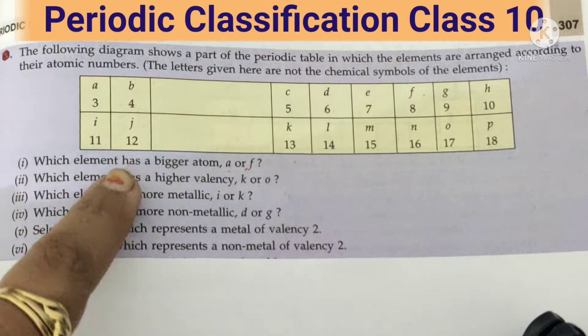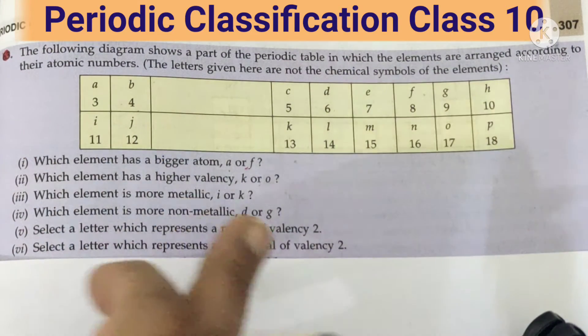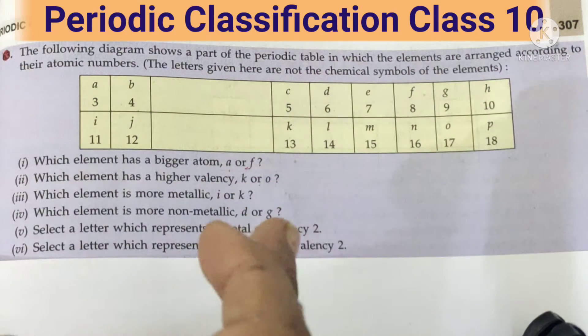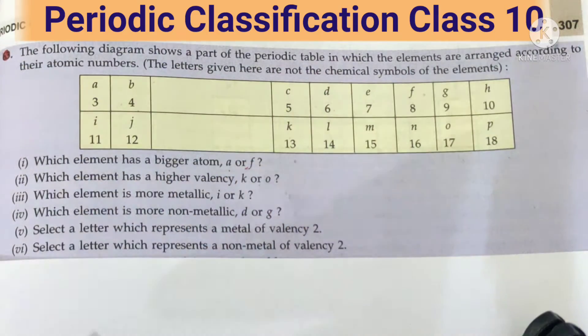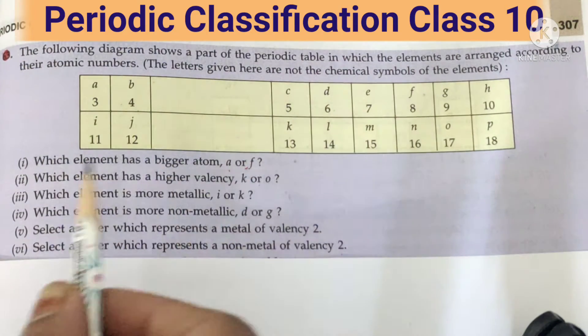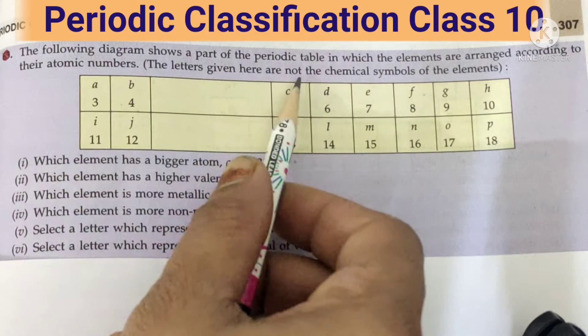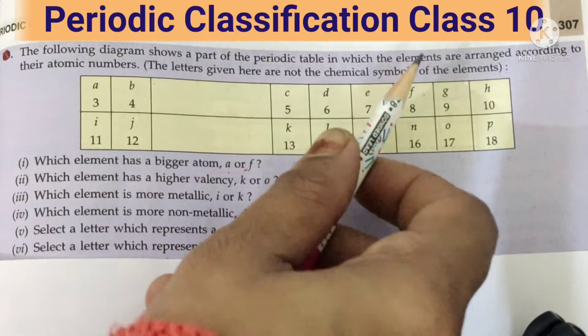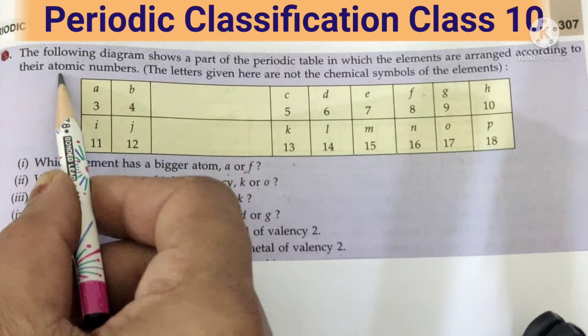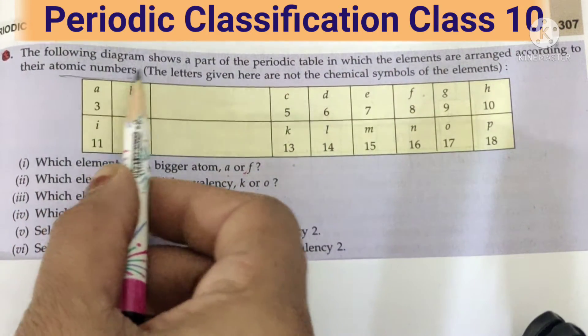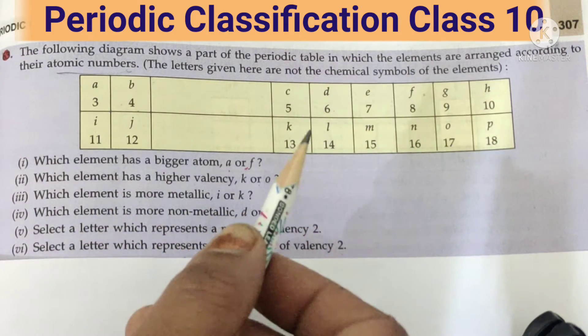So children, in this video we will talk about some very important questions that might come in your exam, and it is one of the most important ones. Can you see one table is given? The following diagram is a part of a periodic table of an element and they are arranged according to their atomic number. That means it is a long form of periodic table.